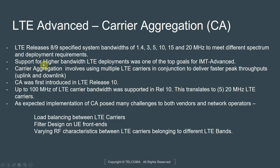One way of doing that is by using carrier aggregation. Carrier aggregation involves using multiple LTE carriers in conjunction to deliver faster peak throughputs, both in the uplink and downlink. You can have two flavors of CA: uplink CA or downlink CA. Carrier aggregation was first introduced in LTE Release 10, and up to 100 MHz of LTE carrier bandwidth was supported, which translates to a maximum of five 20 MHz LTE carriers.